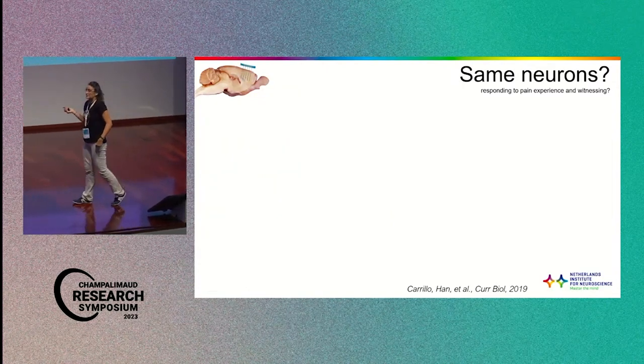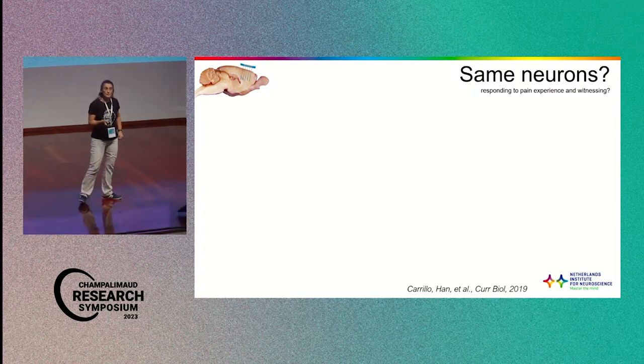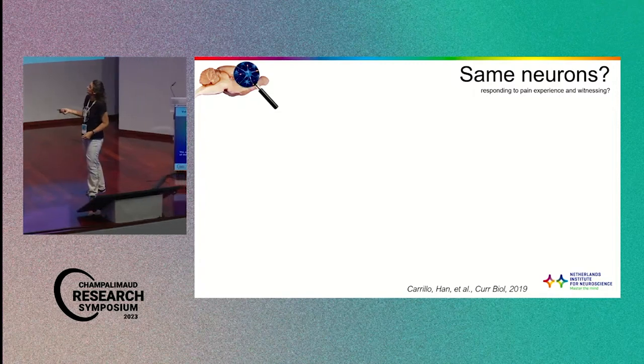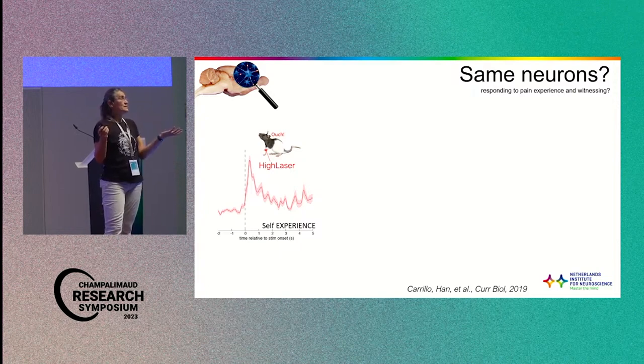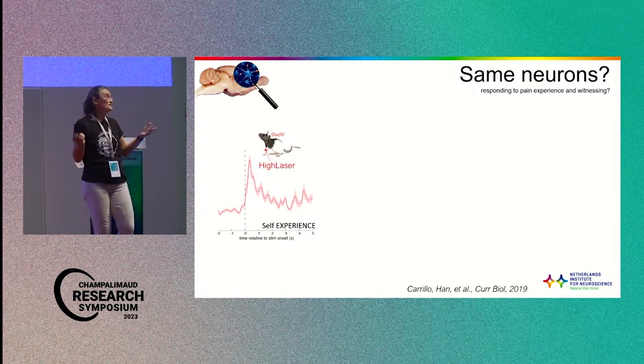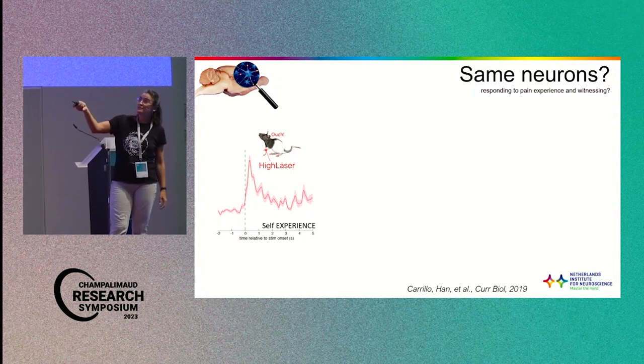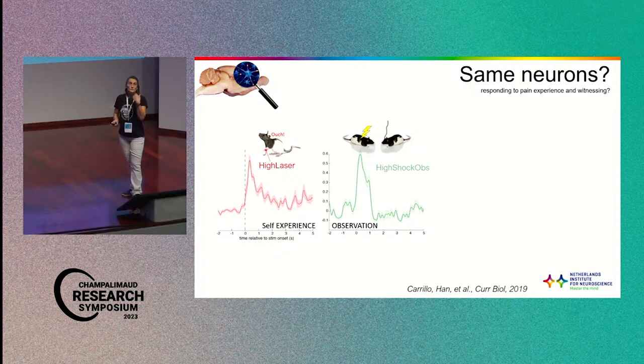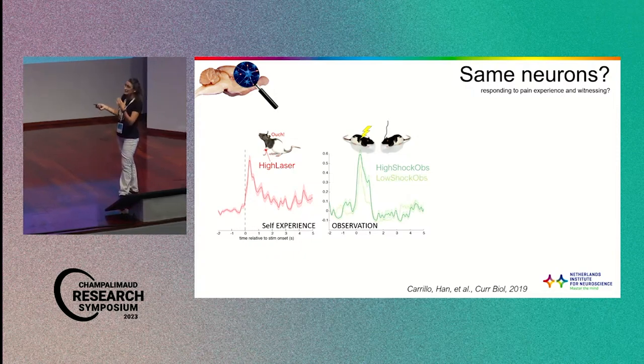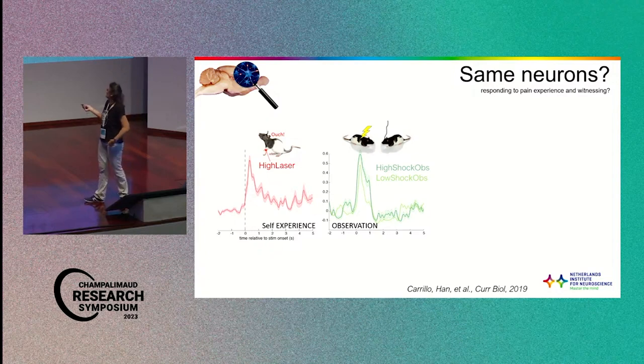And finally, we can also start recording from this region and see and verify whether we have neurons responding both to the self-experience and the observation. And this is what we did. In this case, we used heat laser to stimulate pain responses, because of course, if you are using electrophysiology and you use the shock, your signal is gone. So these are neurons responding to the self-pain, and the very same neurons respond also to the other animal getting the shock and being in this stressful situation. And if I modulate the intensity of the shock to the other, then the responses also modulate accordingly.